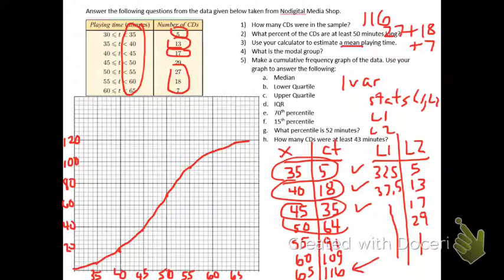What is the modal group? The modal group is the one with the most frequency, most often occurring group, and that would be 45 to 50.